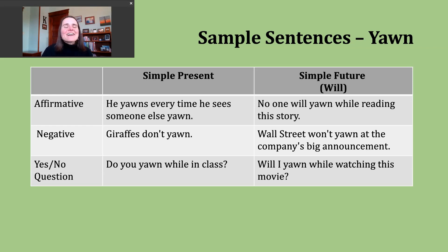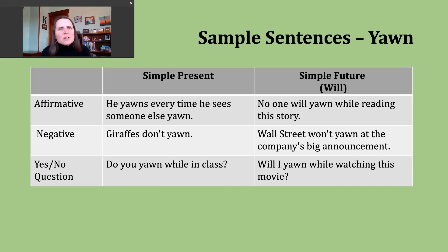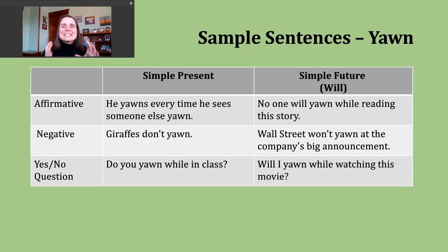Now let's move on and talk about the simple future. Today, we're going to focus on making sentences with 'will.' Will is commonly used when people are making predictions or promises, and can be used with offers as well. To make positive or affirmative sentences, we begin with our subject — and here it doesn't matter what the subject is. What comes next is always 'will,' our modal word, and then the base verb. No suffixes — no S, no -ing, no -ed.